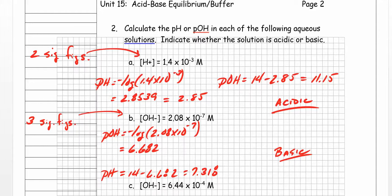Number two says: calculate the pH or the pOH in the following aqueous solutions, and we're going to indicate the solutions as acidic or basic. We're told that the hydrogen ion concentration is 1.4 times 10 to the minus 3 molar. The most straightforward way to arrive at the pH is to use the formula: pH equals minus the log of the hydrogen ion concentration. So pH equals minus the log of 1.4 times 10 to the minus 3.